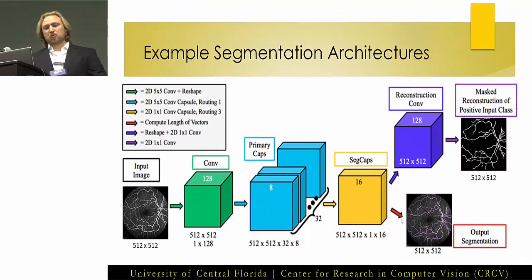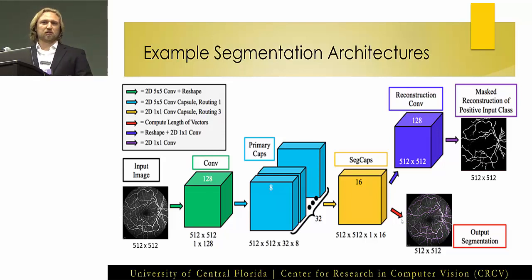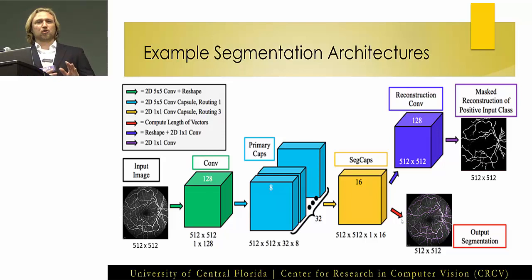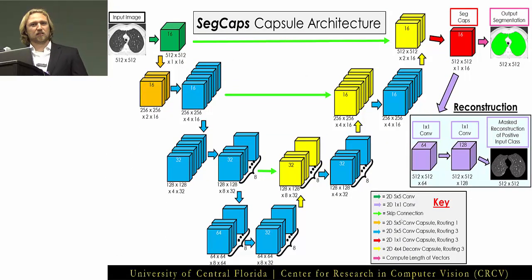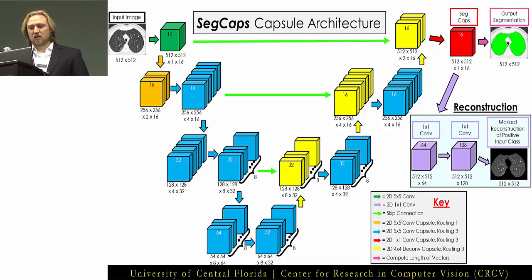Using these we're able to create a segmentation architecture. Our goal was to create something as close to the original Sabour implementation as possible so we could compare directly. Then in a next step we pushed this further, creating a deep encoder-decoder, U-Net style architecture. Both architectures performed extremely well for the tasks I'm about to discuss.